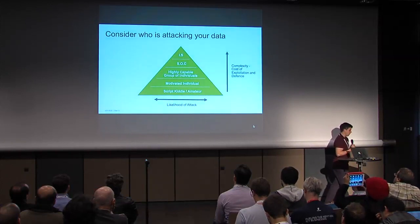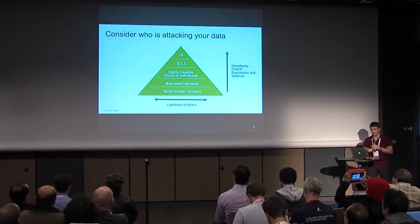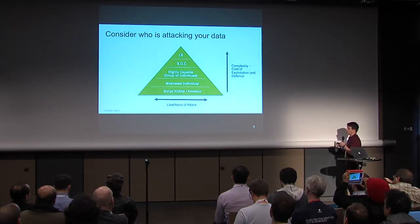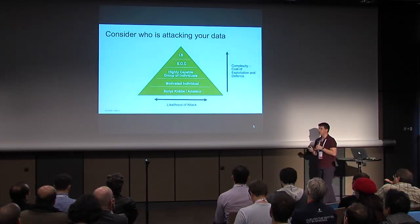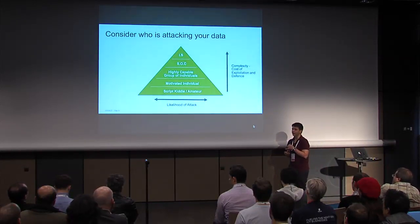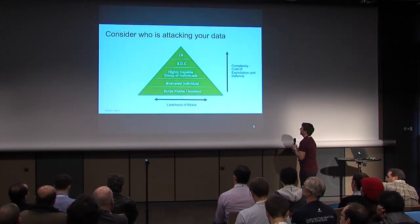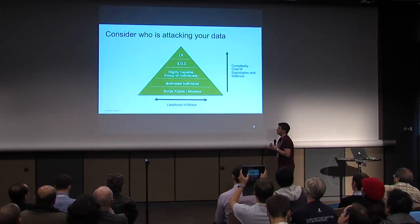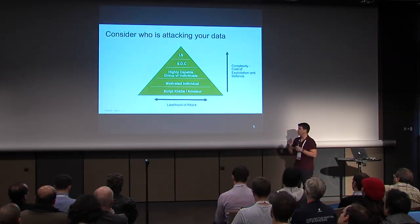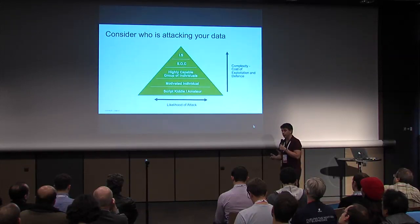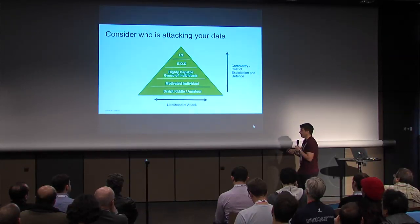One of the things you have to consider along with STRIDE is exactly who's trying to attack your data. This diagram is from the OpenStack security guide. When you're designing a system, you have to consider who's going to try and attack it. Everybody's familiar with the idea of a script kiddie — someone that just downloads tools and runs them. Unfortunately the reality is those tools are now incredibly powerful, so you really have to worry quite a lot even about the person on the bottom rung.